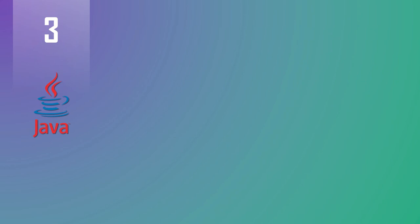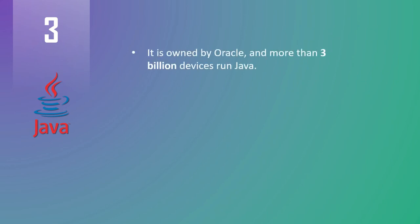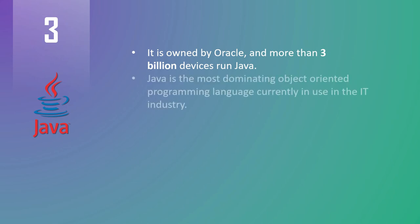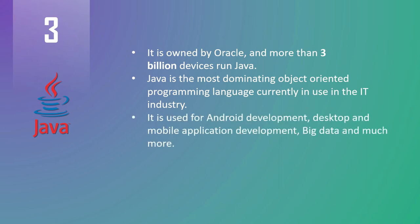At number three we have Java. Java is a popular programming language owned by Oracle, and more than 3 billion devices run Java. Java is the most dominating object-oriented programming language currently in use in the industry. It is used for Android development, software development, desktop and mobile application development, big data, and much more.